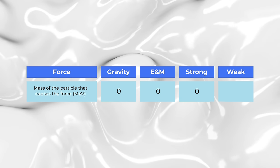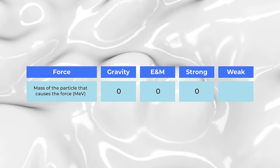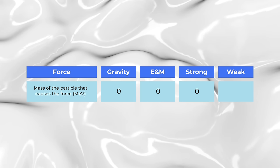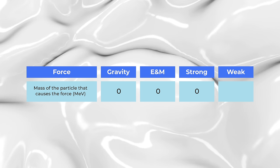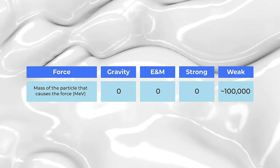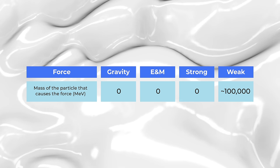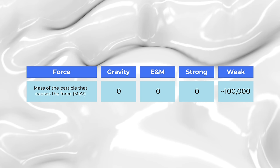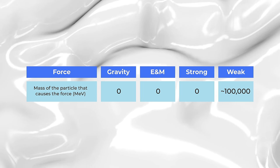For electromagnetism, gravity, and the strong force, the force-carrying particle is massless. But for the weak force, those force-carrying particles are heavy, very heavy. Each one weighs nearly a hundred times as much as a proton, which is approaching a hundred billion electron volts, and that changes everything.